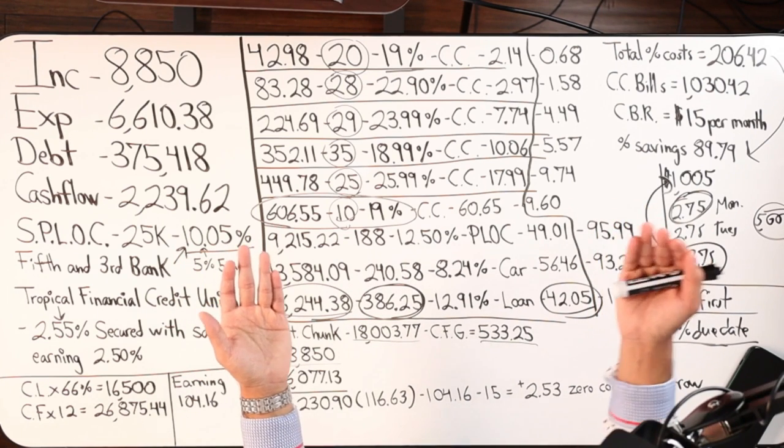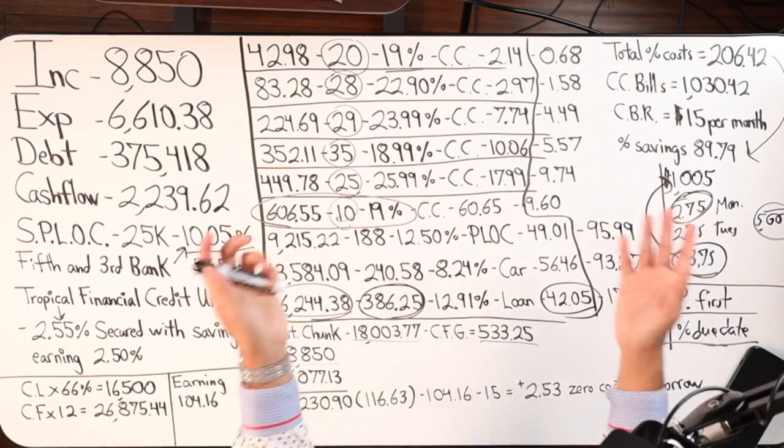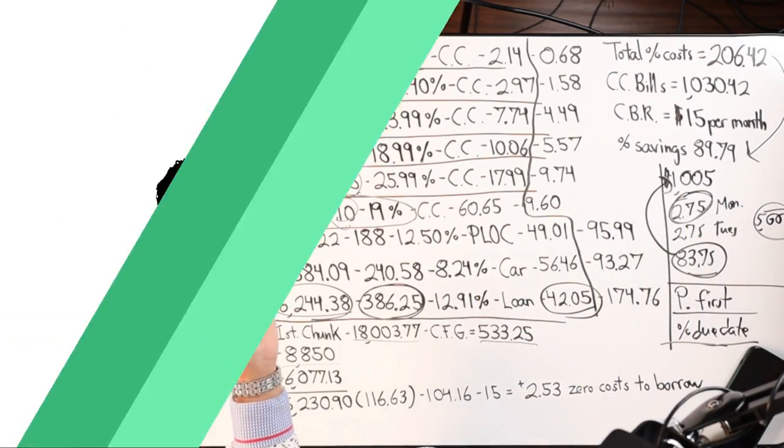Now I'm paying 50% less in costs. That is all we're doing with velocity banking. That's all we're doing. We're moving high interest to low interest, and then we're offsetting that interest and paying nothing.